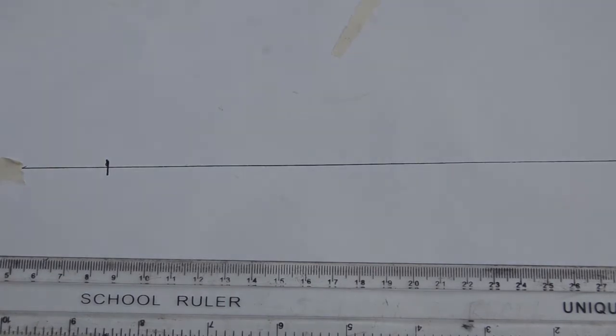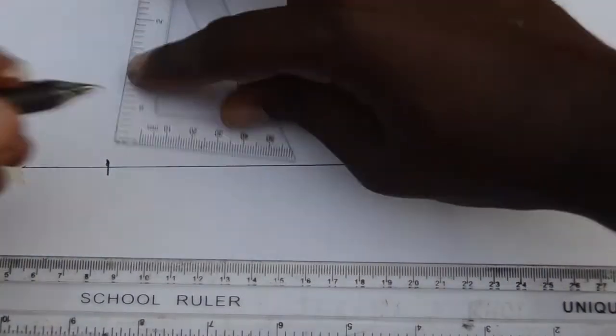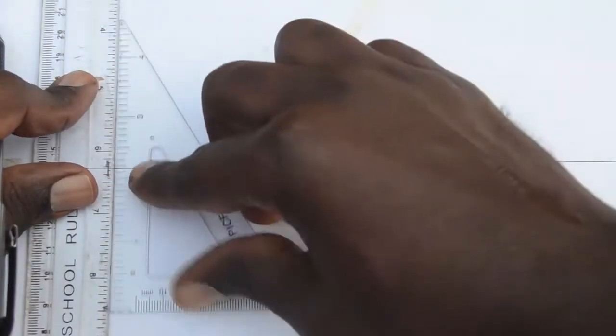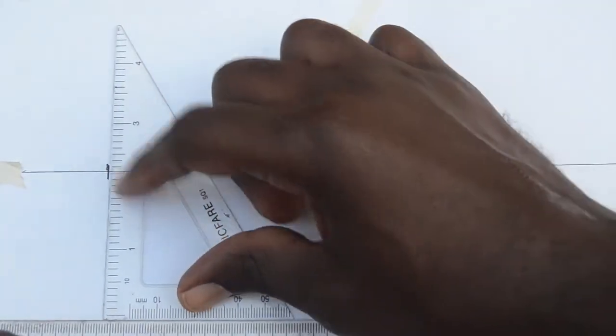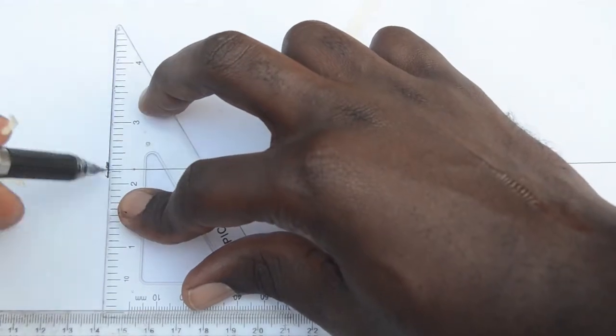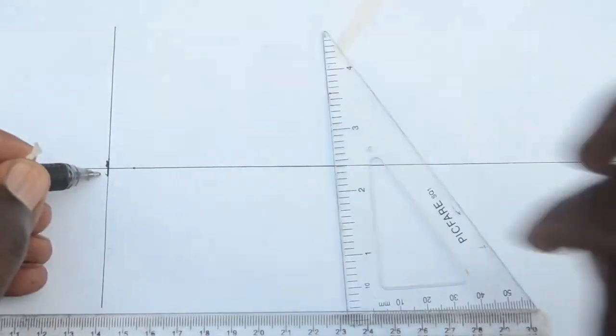Mark off a random point along this horizontal line and draw a line perpendicular at this point. This becomes our directrix point D.